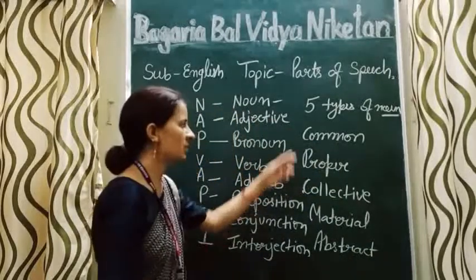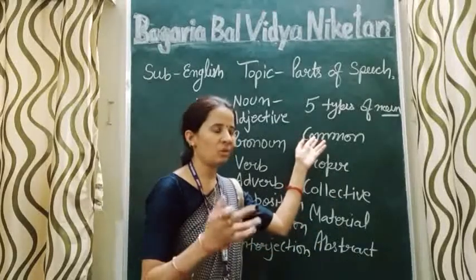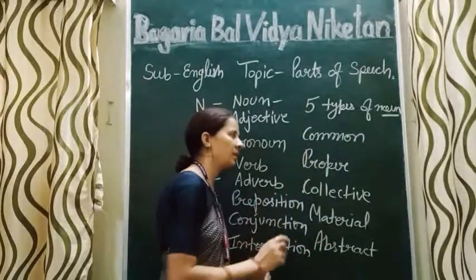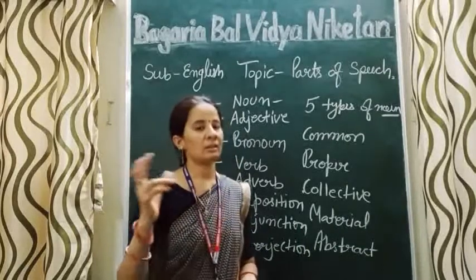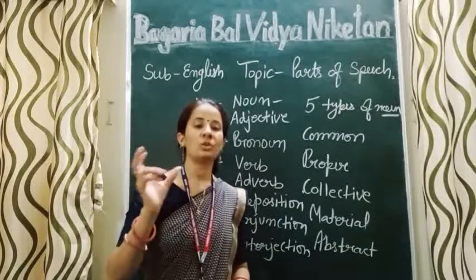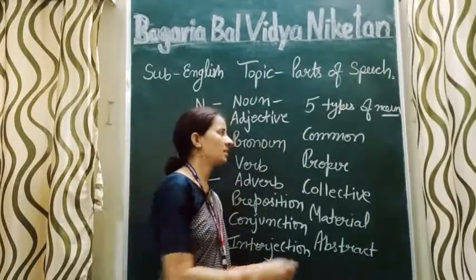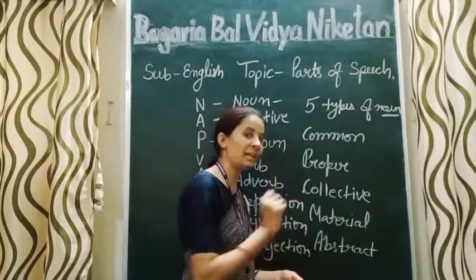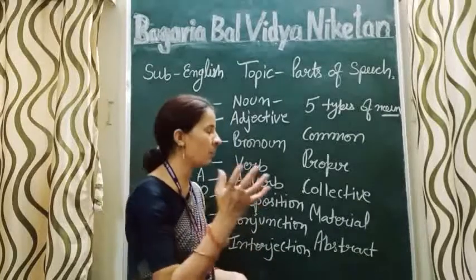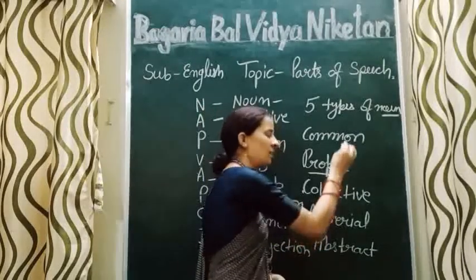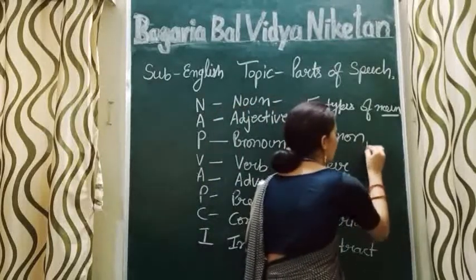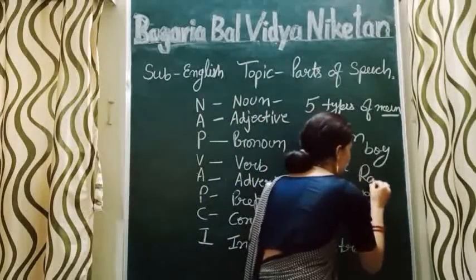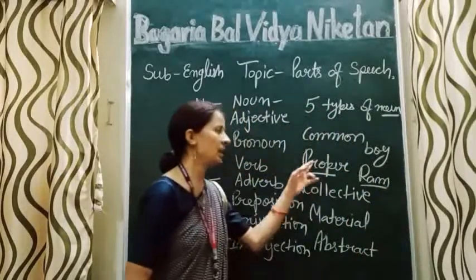Now students, first we take common noun. By the name itself we can know what is common noun — all the common names. Jitne bhi common names hai, wo sab common noun mein aate hai, just like boy, girl, teacher, doctor — ye sab common hai. Jab hum common noun ko a particular name, a special name, a proper name deite hai, tab wo proper noun mein change ho jaata hai. For example, boy is a common noun. Jab hum boy ko name deite hai — Ram — ye proper noun mein change ho jaata hai.